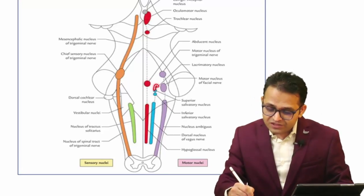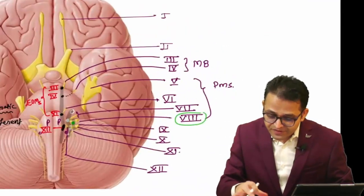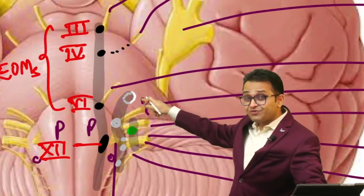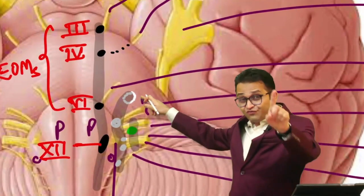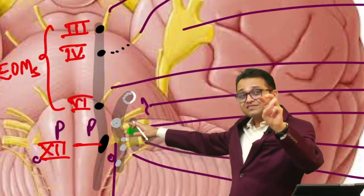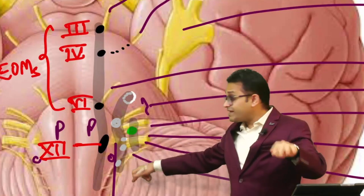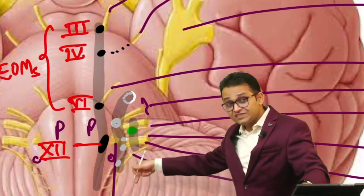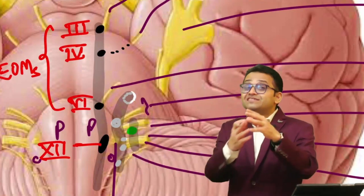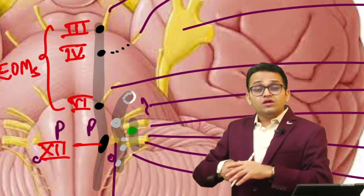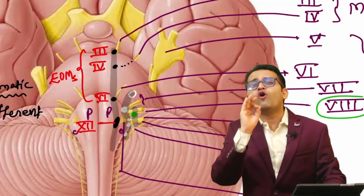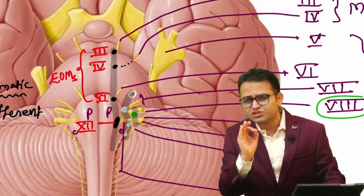Just lateral to the somatic efferent column are special kinds of nerves - fifth, seventh, ninth, tenth, eleventh. The fifth cranial nerve is the nerve of the first pharyngeal arch. The seventh is the nerve of the second pharyngeal arch. Then ninth, tenth - third and fourth pharyngeal arches. The eleventh helps the vagus nerve, making the vagus-accessory complex. So the next column is related to the pharyngeal apparatus.